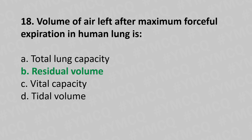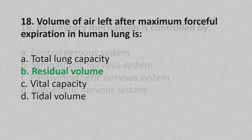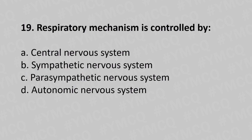Now let's move to question number nineteen. Respiratory mechanism is controlled by: option a, central nervous system; option b, sympathetic nervous system; option c, parasympathetic nervous system; option d, autonomic nervous system. And the answer is option a, central nervous system.